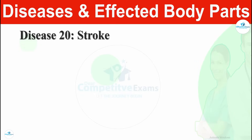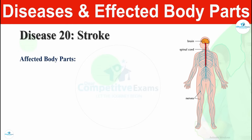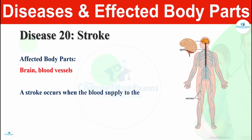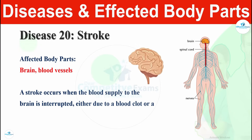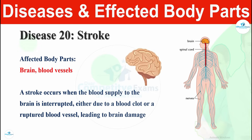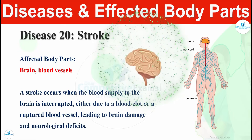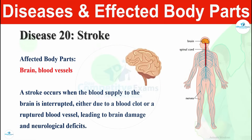Disease number twenty is stroke. Stroke affects the brain and blood vessels. A stroke occurs when the blood supply to the brain is interrupted, either due to a blood clot or a ruptured blood vessel, leading to brain damage and neurological deficits. Stroke affects the brain and blood due to improper blood supply.